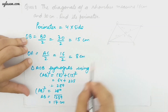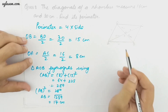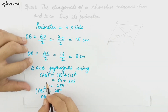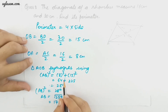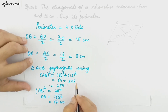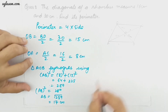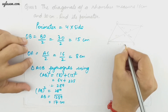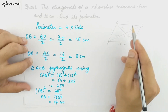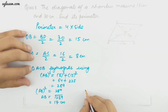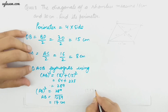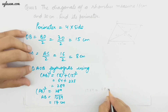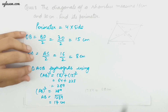To find AB, we use Pythagoras property since AB is the hypotenuse. AB square equals 8 square plus 15 square. The square of 8 is 64 and the square of 15 is 225. The sum is 289, and 289 is the square of 17. So AB is 17 centimeter. Since all sides of a rhombus are equal, the perimeter is 4 times 17 equals 68 centimeter.